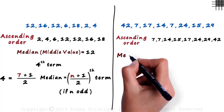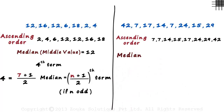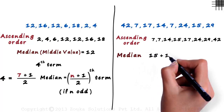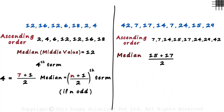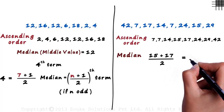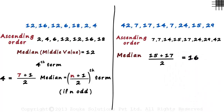What will be the median in this case? As there are eight terms, we cannot find one central value within the set. The median will be the average of the two central terms, fifteen and seventeen: (15 + 17) divided by 2, which is 32 divided by 2, which equals 16. Sixteen is the median of this set of values.